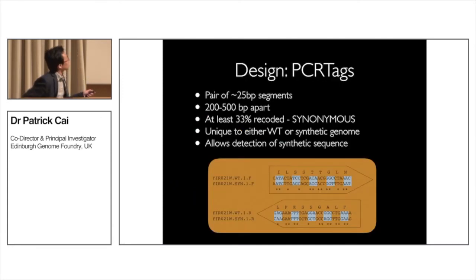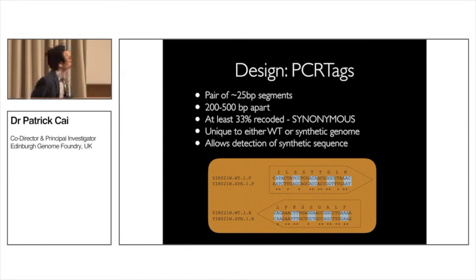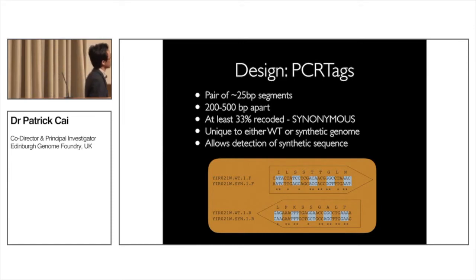The PCR tags are really small pieces of DNA — roughly 25 base pairs — and they are 200 to 500 base pairs apart from each other in the coding region. They are at least one-third different in sequence. The wild-type PCR tag and the synthetic PCR tag both code for the same amino acids but differ in sequence, so when you run the wild-type tag only the wild-type genome will line up, and when you run the synthetic tag only the synthetic DNA will line up.